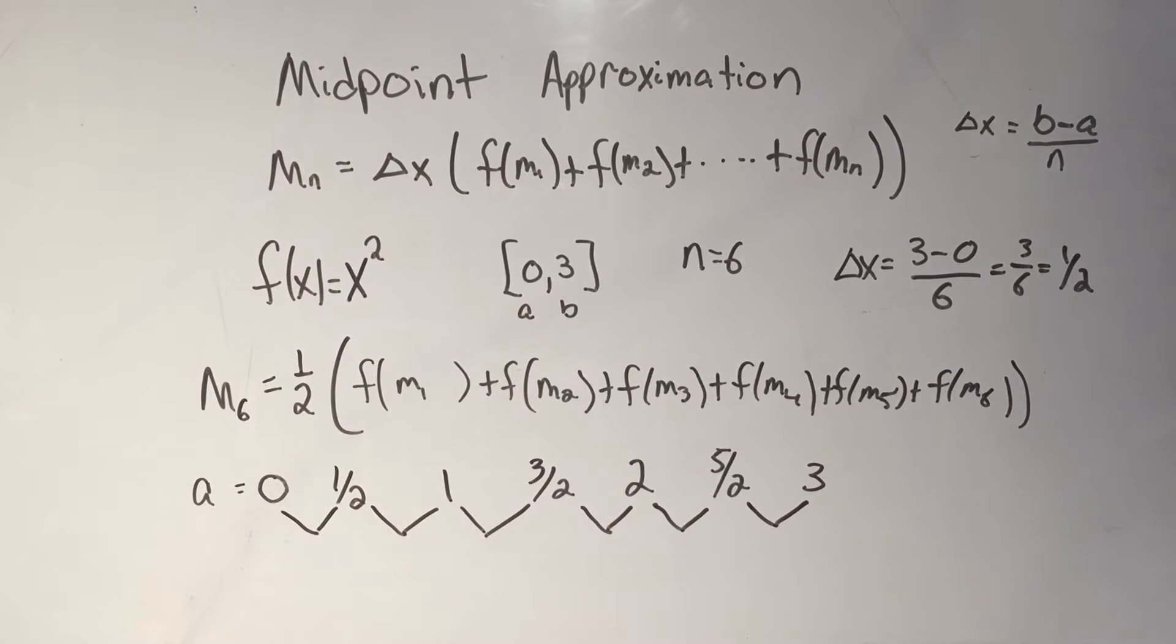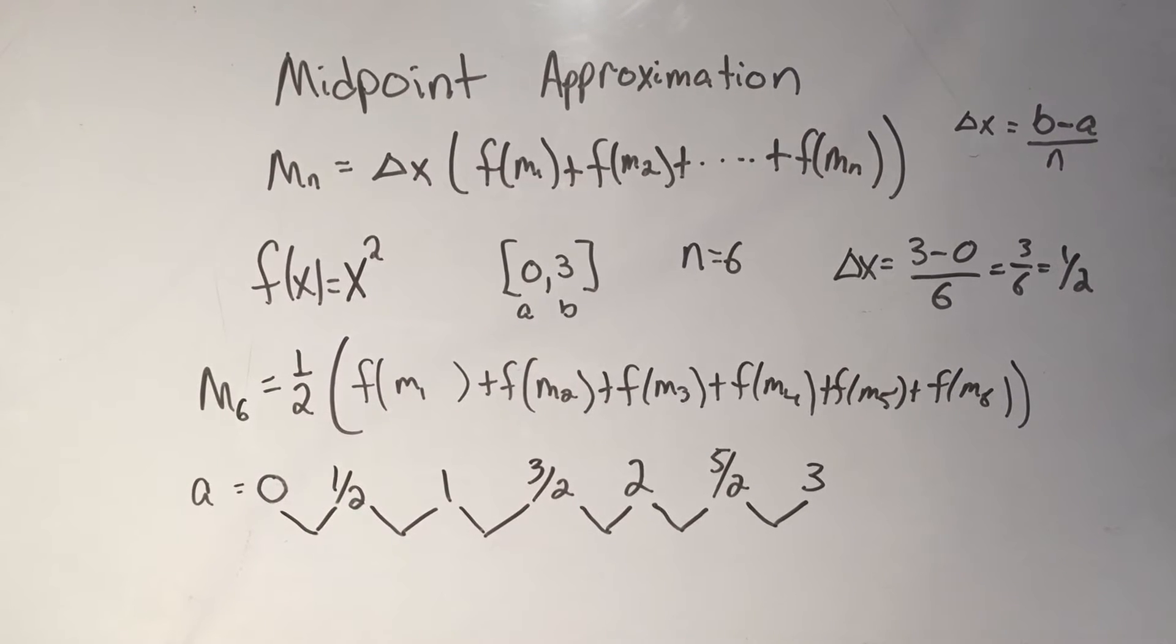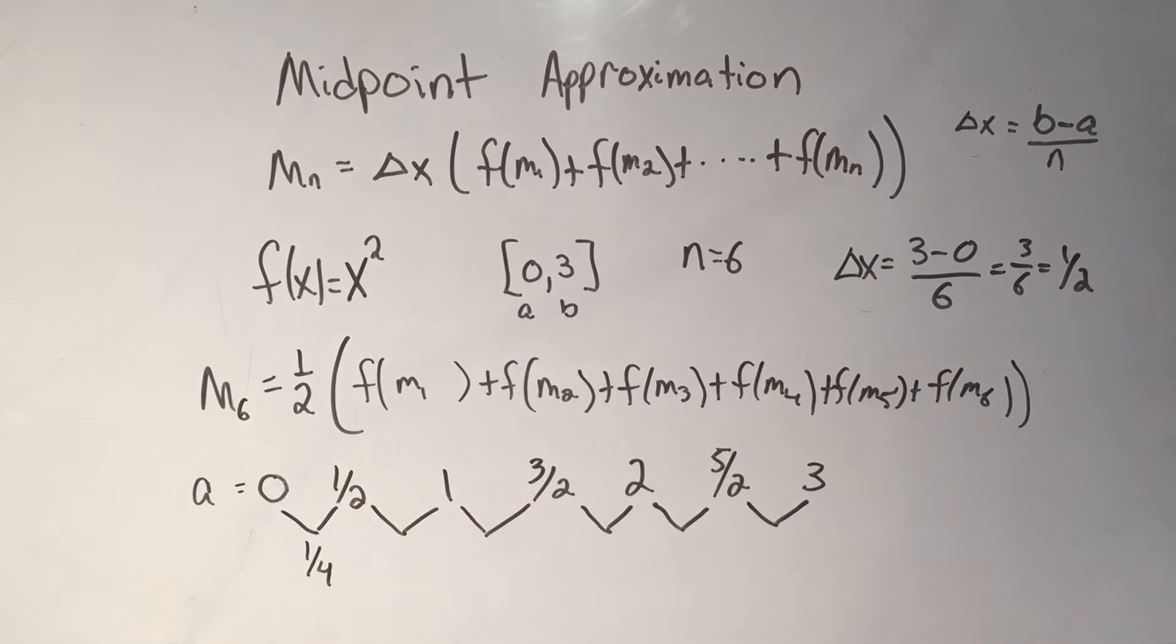So I need to take the average of all of these numbers. Okay? I'm going to take the average of these things. So the average of 0 and 1 half, that's 0 plus 1 half over 2, that's 1 fourth.